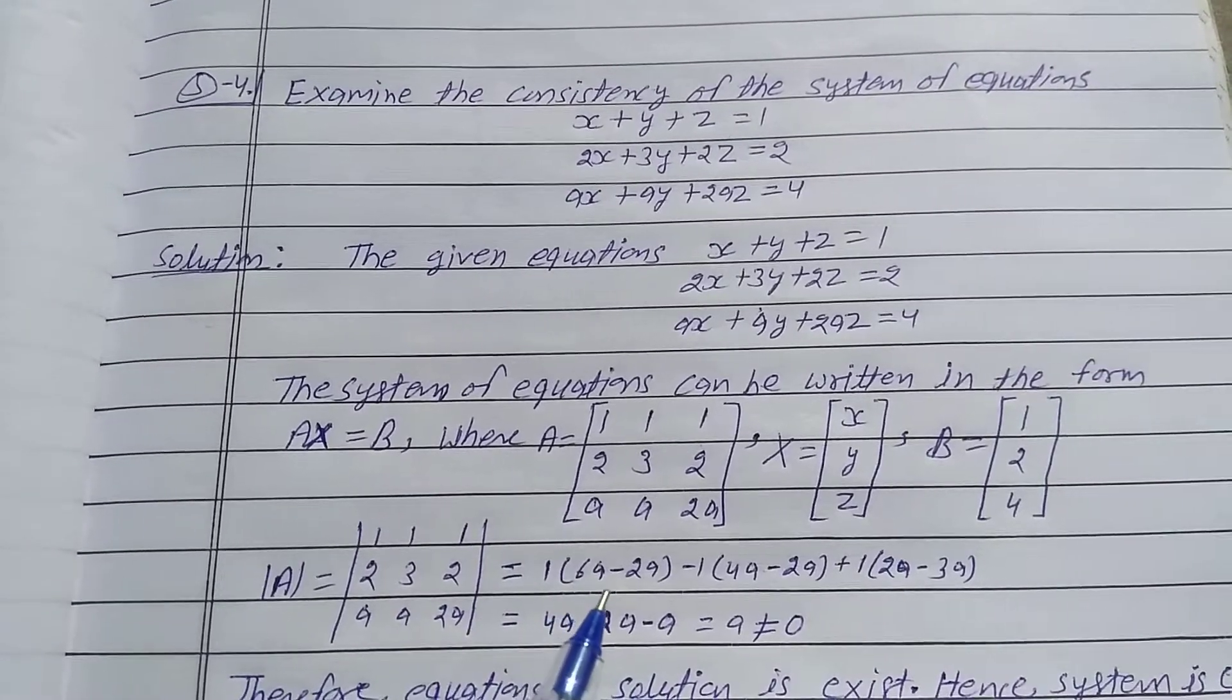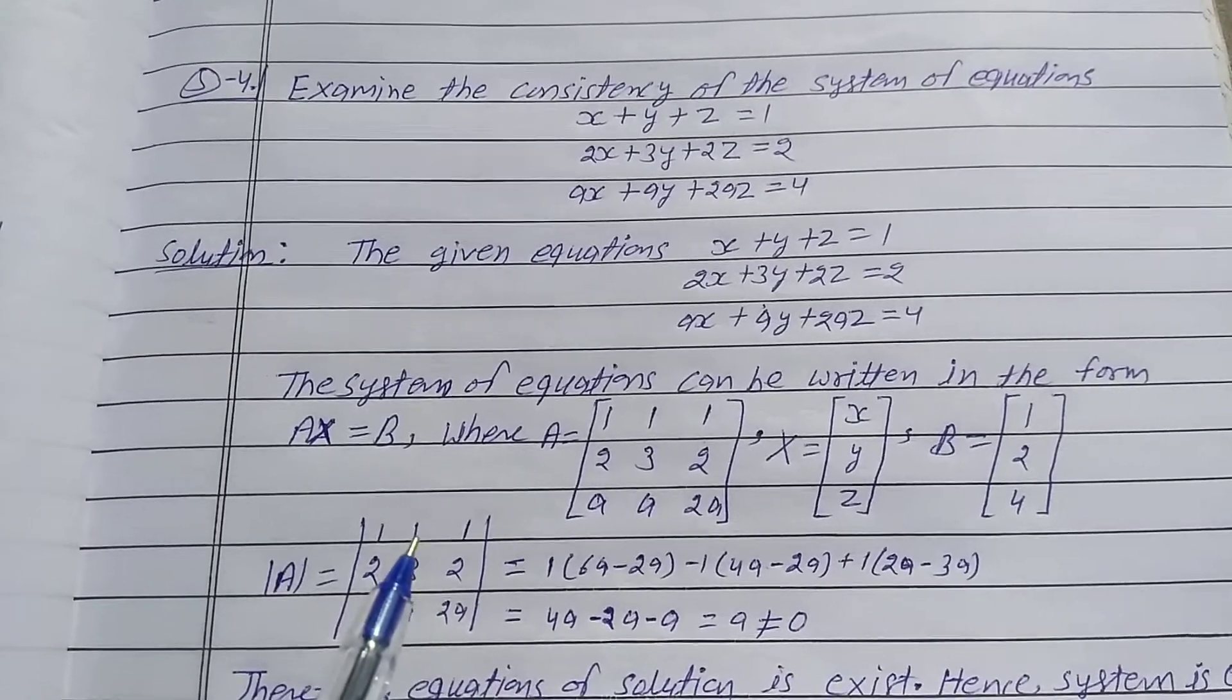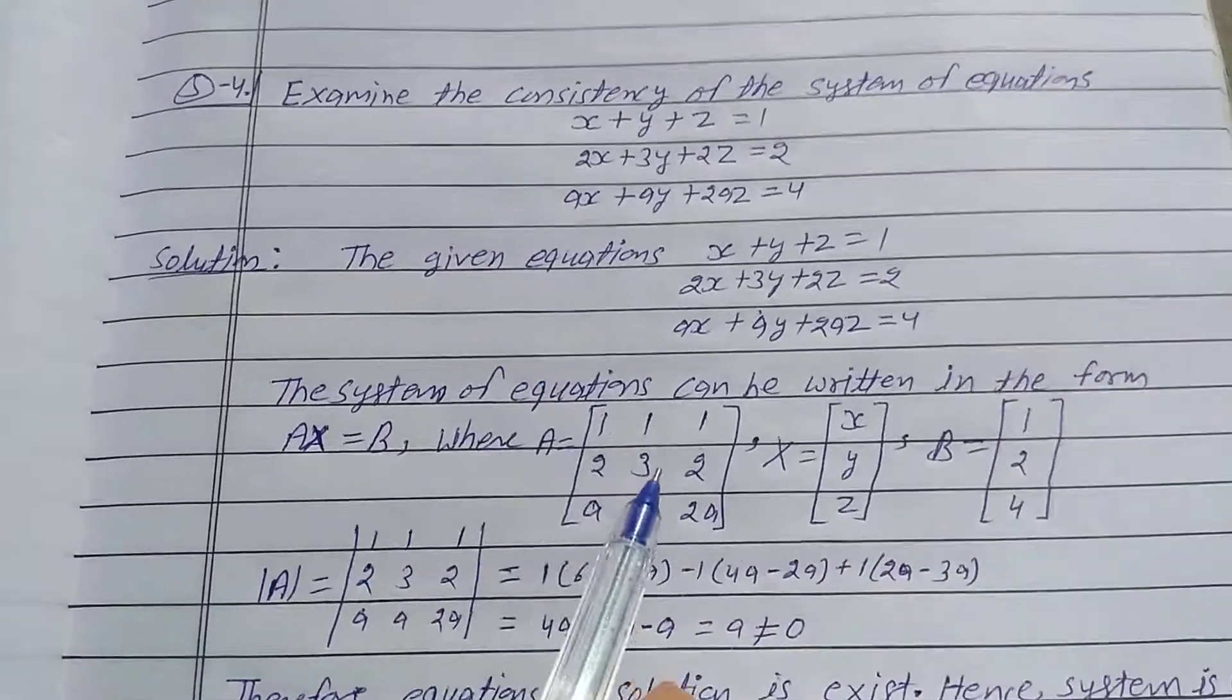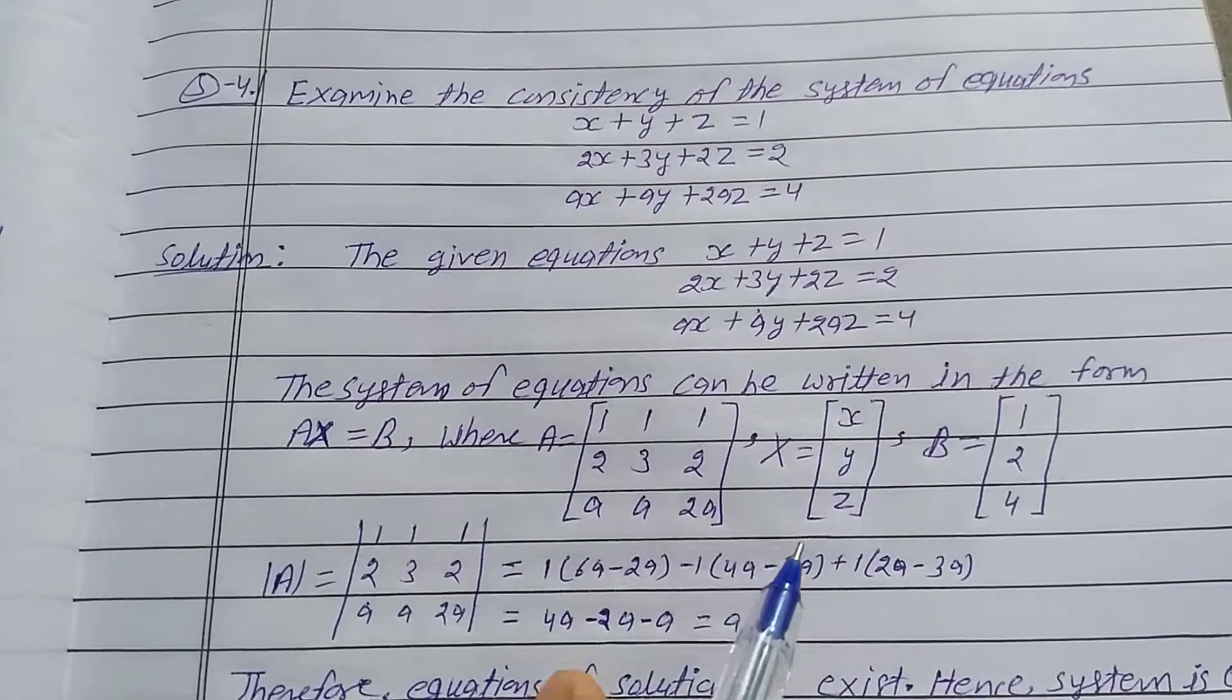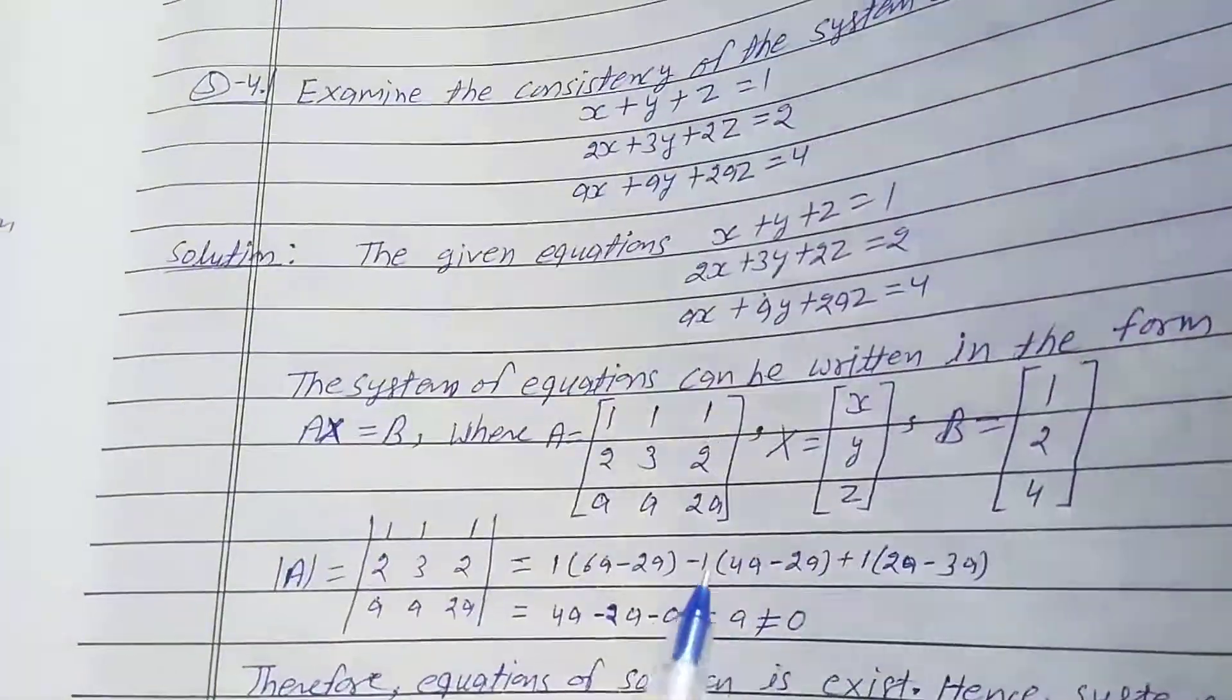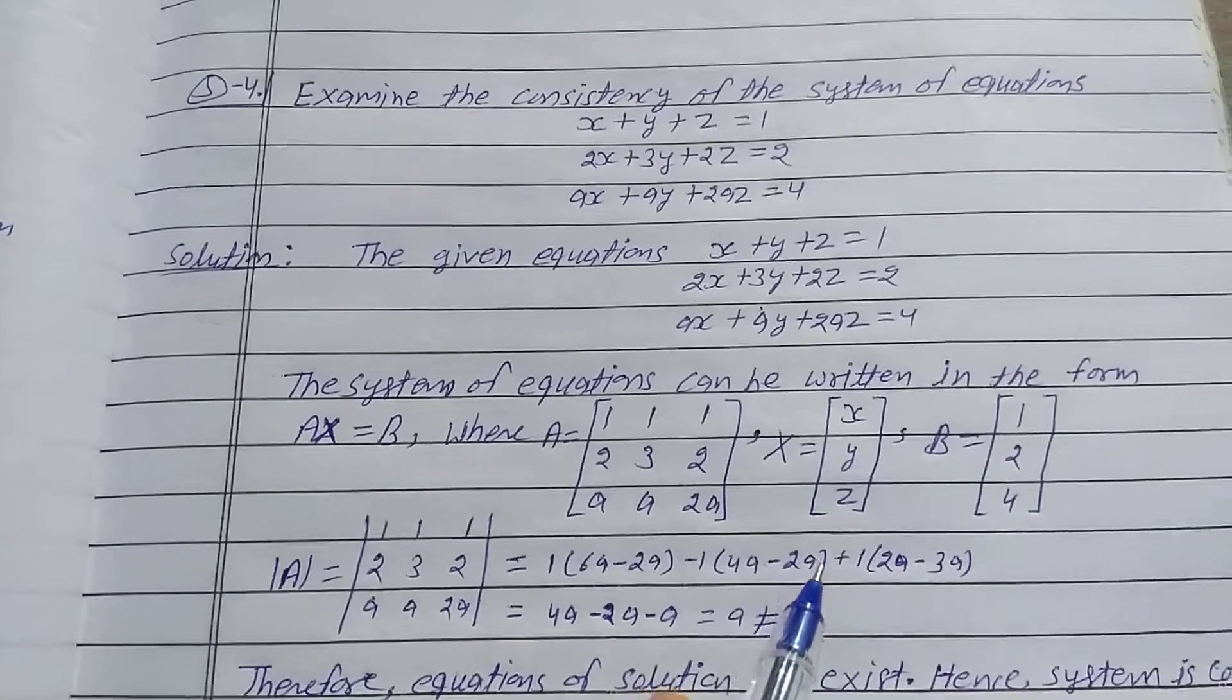3 into 2a is 6a minus a into 2 is minus 2a. Take minus sign, break it off. 2a into 2 is 4a minus a into 2 is minus 2a. Plus 1, take cofactor. a into 2 is 2a minus a into 3 is minus 3a.